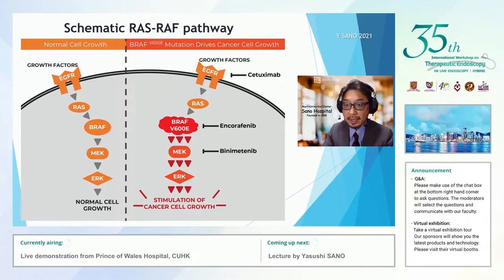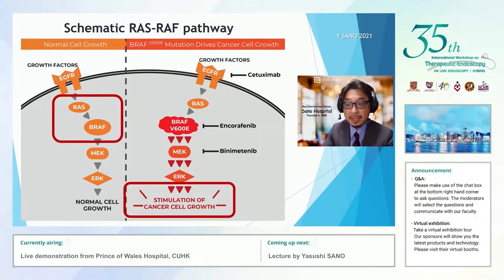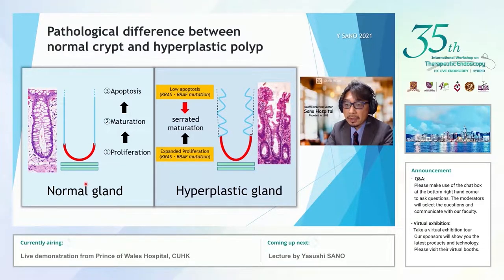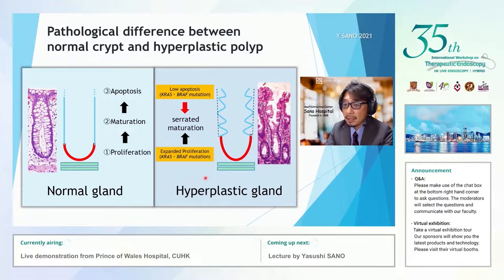This slide shows the schematic RAS-RAF pathway. RAF is located downstream of the KRAS mutation, and both abnormalities promote tumor growth activity. Both genes are important as early genetic alterations in the serrated pathway. The mechanism of serration is understood in this way: in normal glands, cells develop at the base of the gland and migrate upward while maturing, then shed through apoptosis. In contrast, in hyperplastic polyp, abnormalities of KRAS and BRAF lead to increased cell proliferation at the base of the gland and abnormal shedding mechanism resulting in serration.